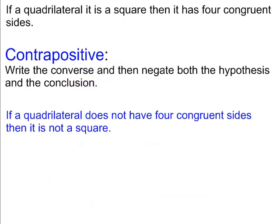Original statement: if a quadrilateral is a square, then it has four congruent sides. For the contrapositive, you write the converse — flipping the order of the hypothesis and the conclusion — and then you negate both as well. So it becomes: if a quadrilateral does not have four congruent sides, then it is not a square. The 'does not have four congruent sides' was part of our conclusion, and 'not a square' is the negated hypothesis.